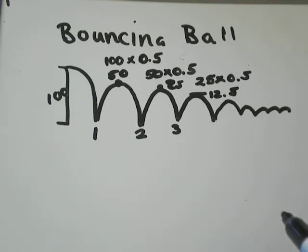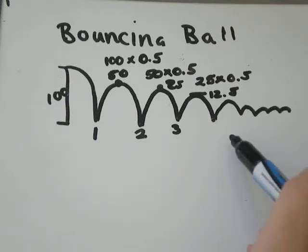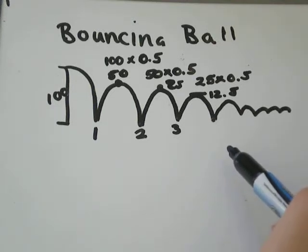So the method of drawing a picture is good to a certain extent. If you had a ball that was dropped off a 200m high cliff and it bounced 1,000 times, and you want to find the height on the 999th bounce, you don't want to draw a picture like this and draw 1,000 bounces.